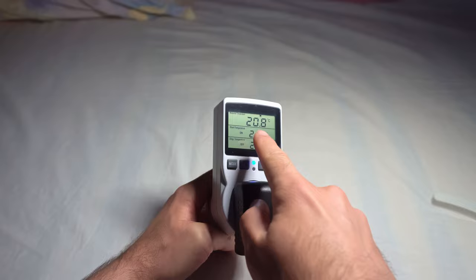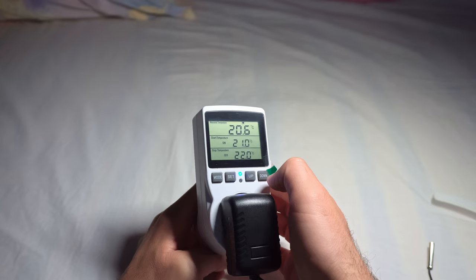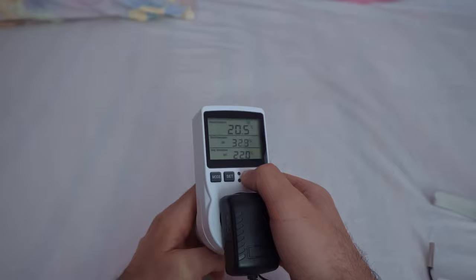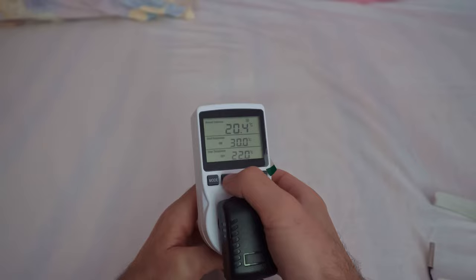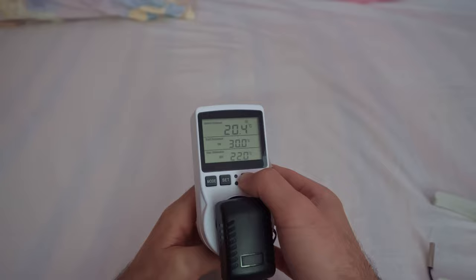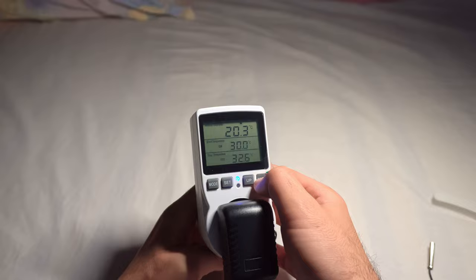Now let's use a higher temperature. Let's make it power on at let's say 30 degrees. Go to the next one with the set, and power off at let's say 29.9. Press the up button to increase the temperature. 29.9. So currently we have 20 degrees Celsius.